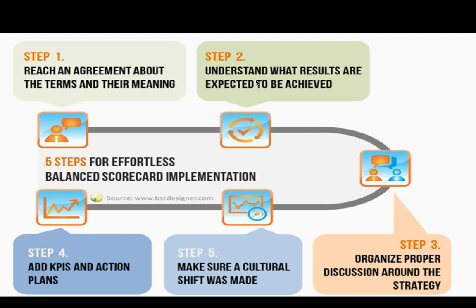In step three, we organize proper discussion around the strategy. We outline the strategy map — the links between the mission, the internal processes, the customer focus, the learning and knowledge, and the finances. That strategy map is then put into a balanced scorecard tool, which has its objectives and its measures, and finally that's put into an action plan.